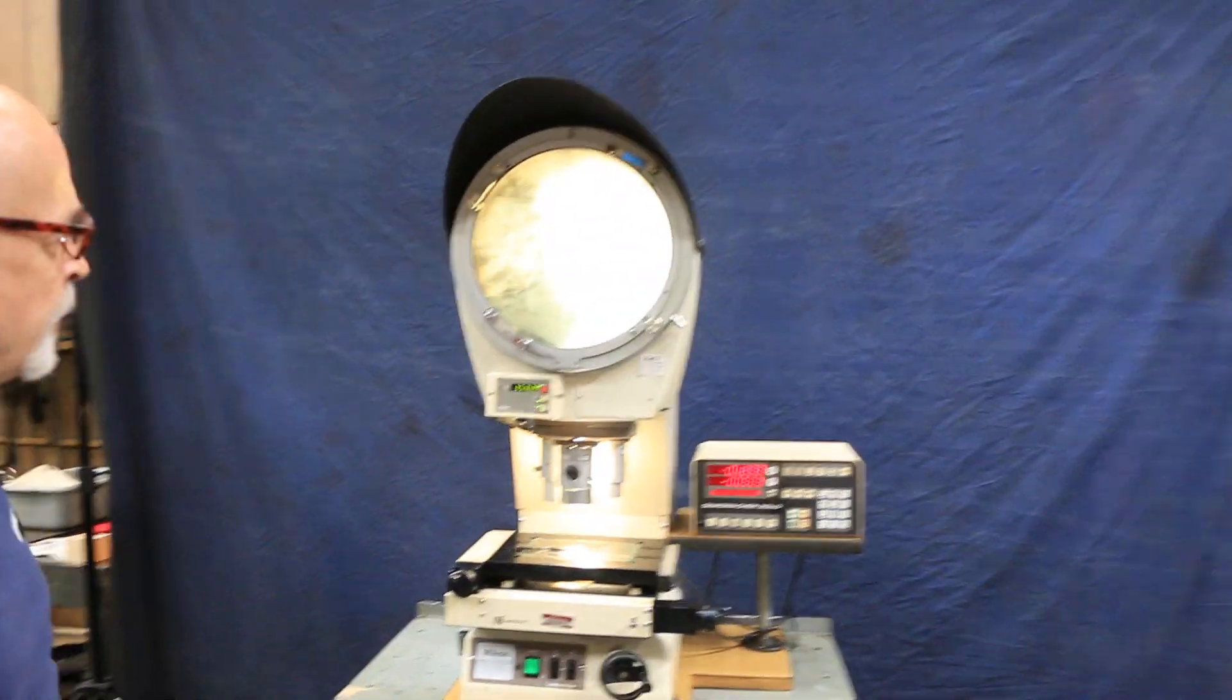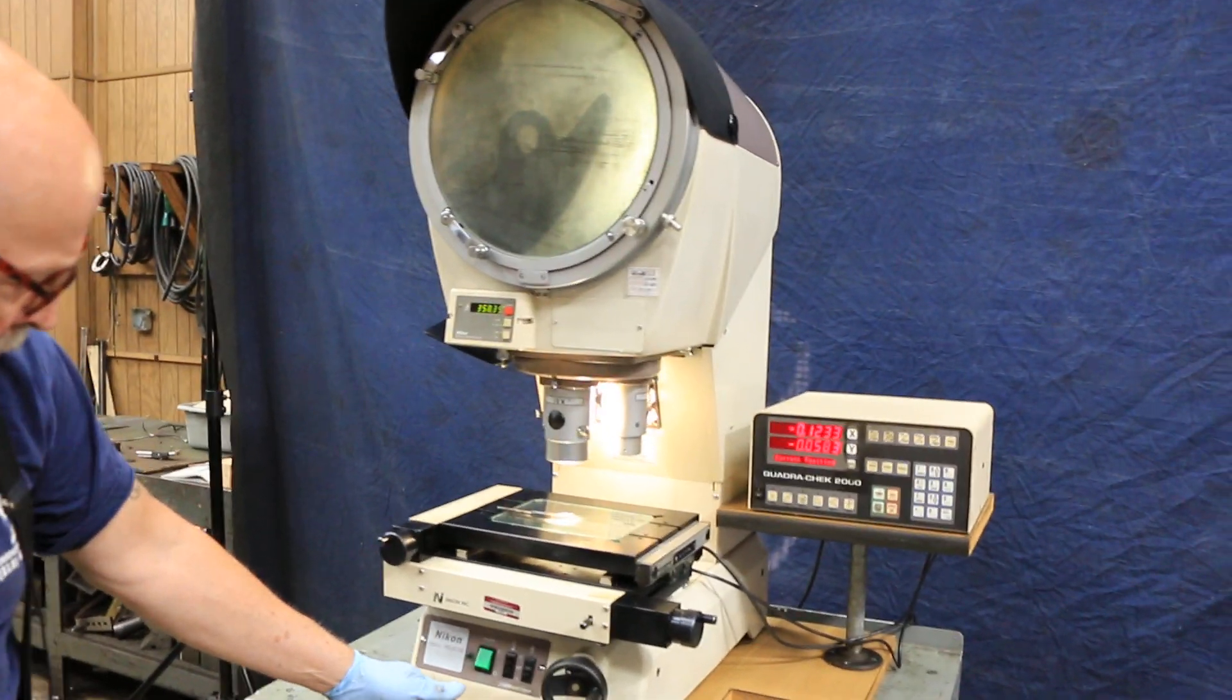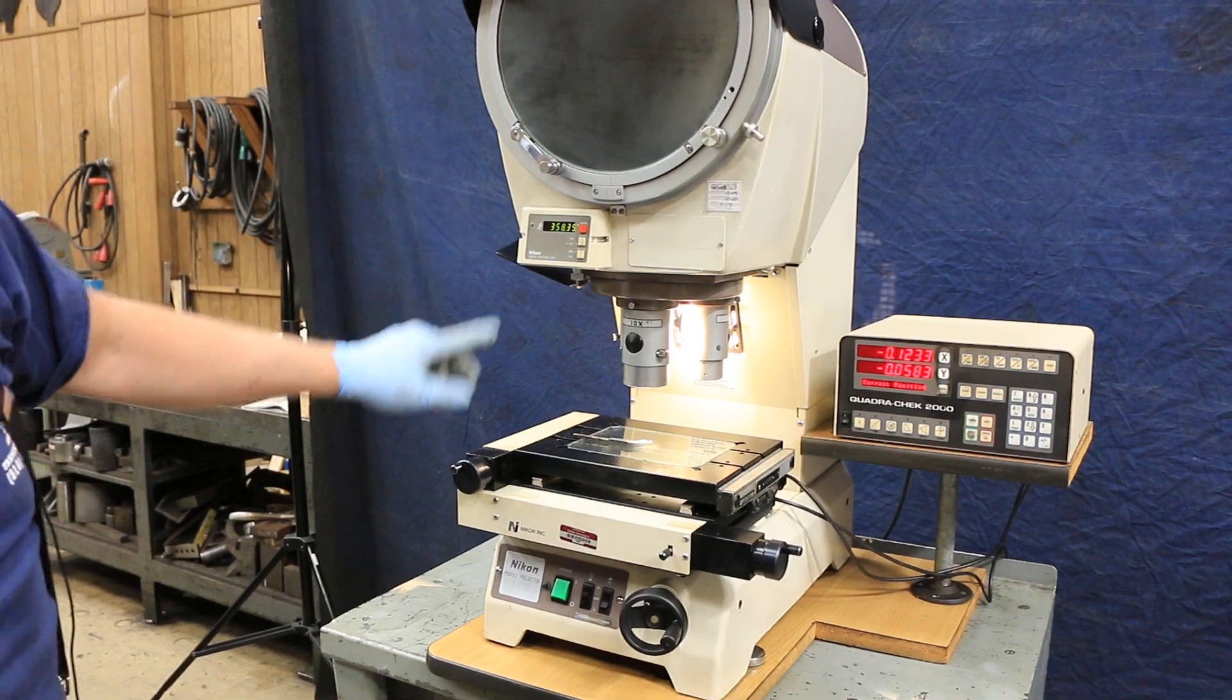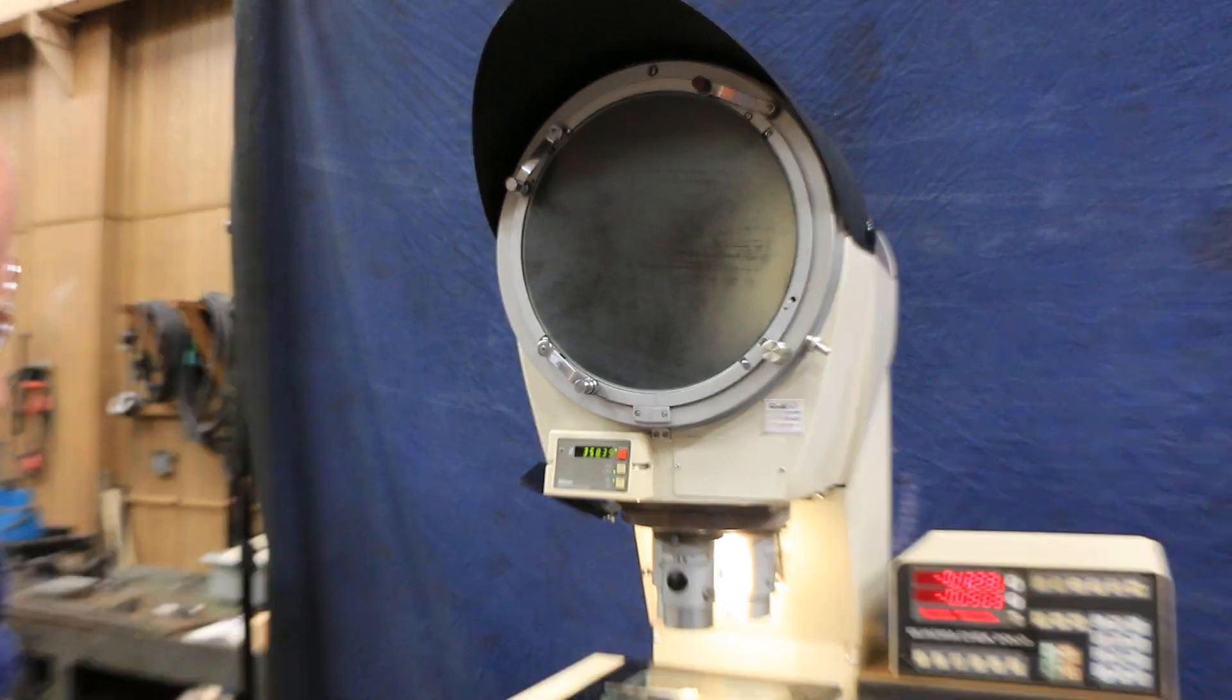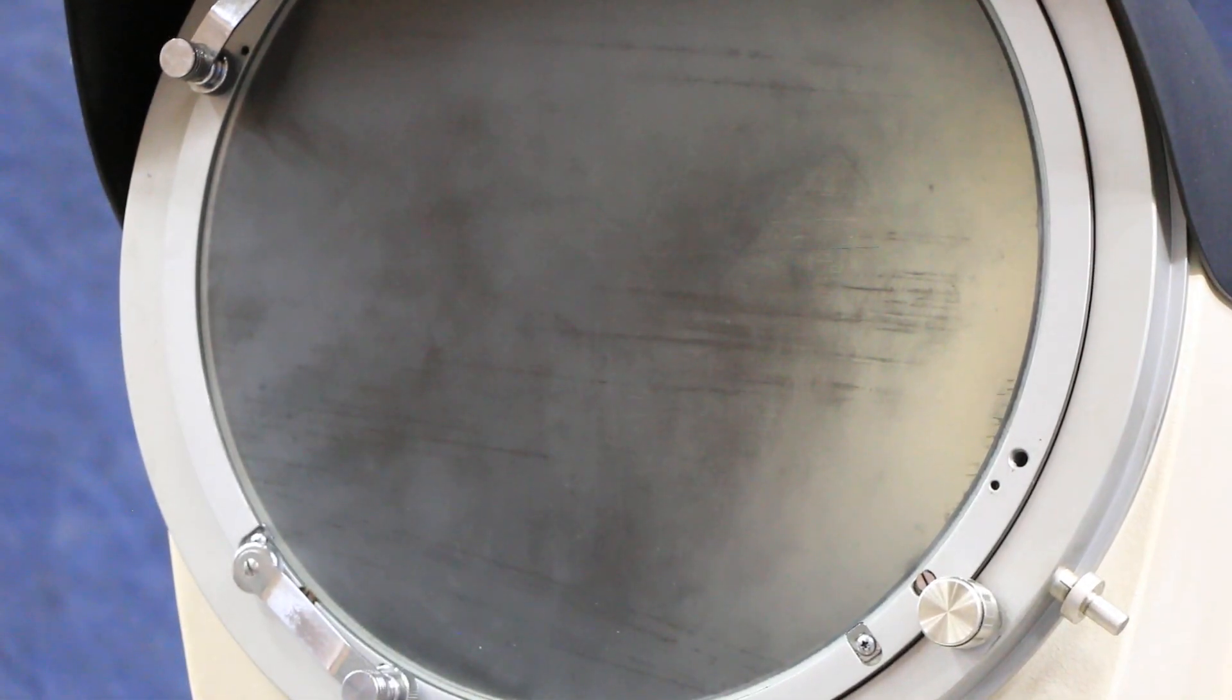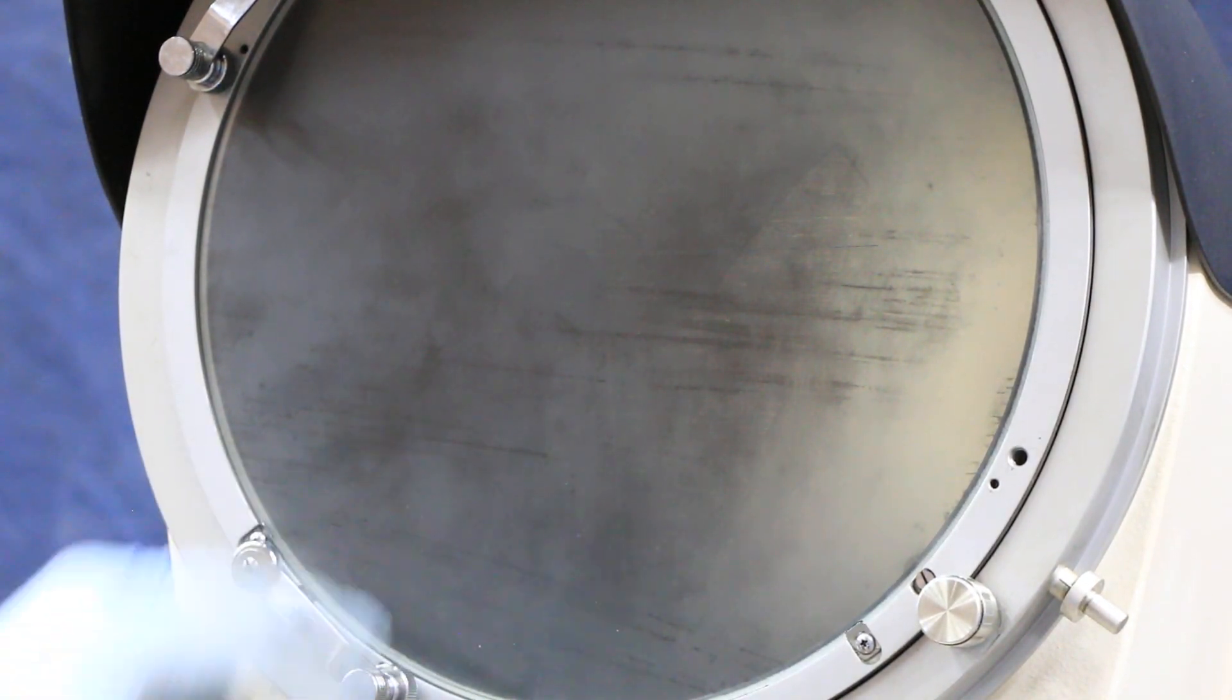This also has surface illumination, where if we were to shut this off, we can actually see the grinding marks on the piece of metal there, if I'm in focus well enough. It's kind of hard to see that, but that's what you can see with that.